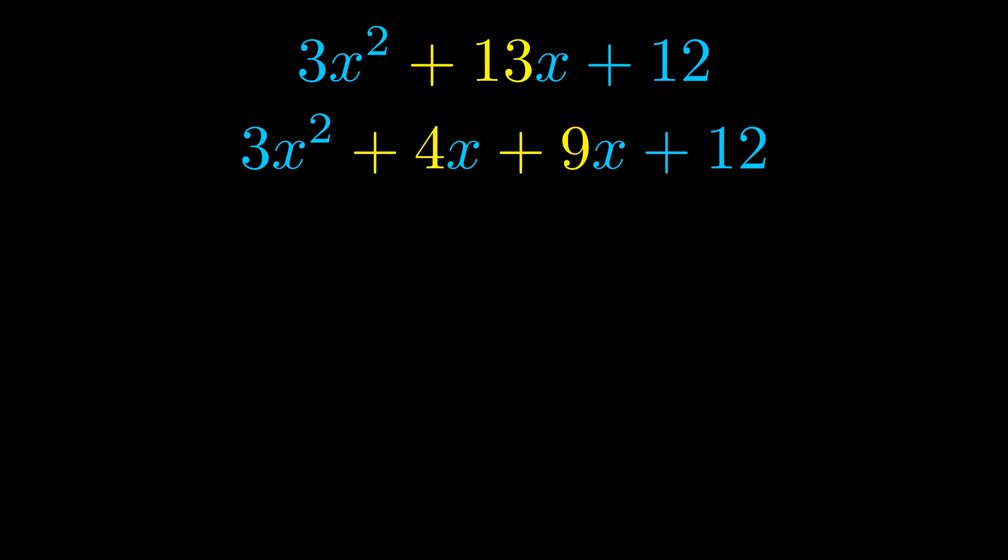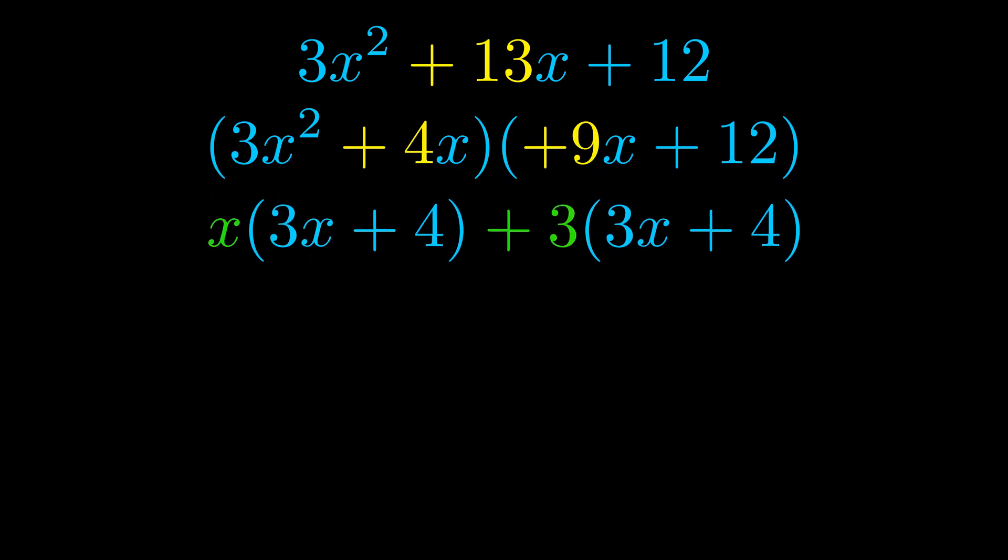Once we've done this, we put parentheses around the first term and the last term. And we do that so that we can take the greatest common factor out of both terms. We can see the greatest common factor is now outside in green. Notice also how what remains inside of the parentheses is the same in both cases. The blue values are the same.